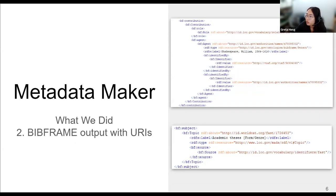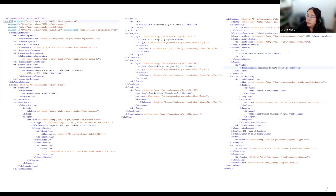Another thing that we worked on was improving the BIBFRAME records. We added URIs for agent names and FAST headings. The first screenshot is an example of a contribution element. The LC NAF URI of Shakespeare is added to the agent node. Both VIAF and LC NAF URIs for him are added as the value of identifiers. The second screenshot is an example of a subject element. The FAST heading URI is added to the topic node. Now let's take a look at the BIBFRAME record example.